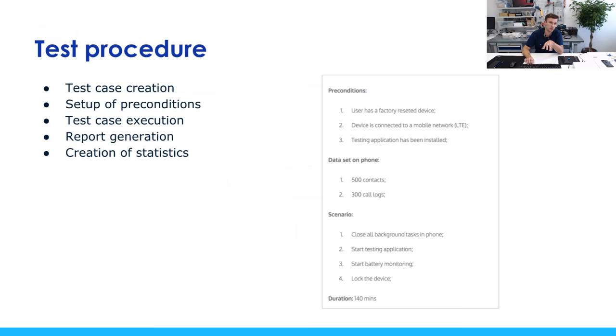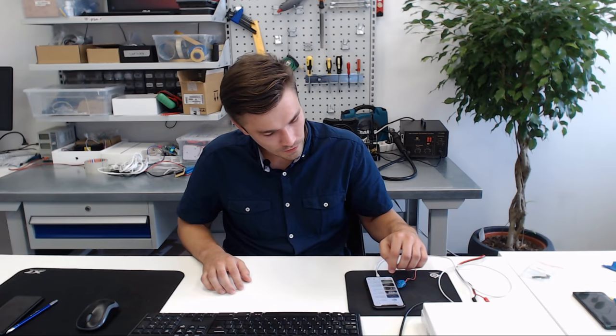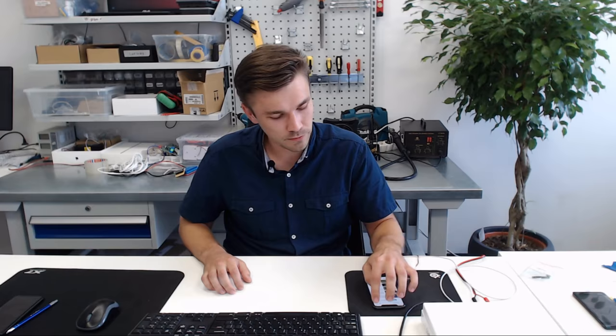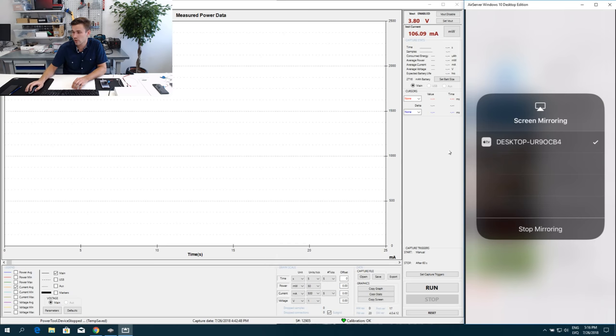I'll show you a quick demo with an example. Let me switch my screen. What you now see on screen — besides me — is the power monitor software, which is currently measuring something from a device lying here on my desk. This is an iPhone X; we've disassembled it for this webinar. There are all wires hanging on it, but I won't pick it up in case we break something.